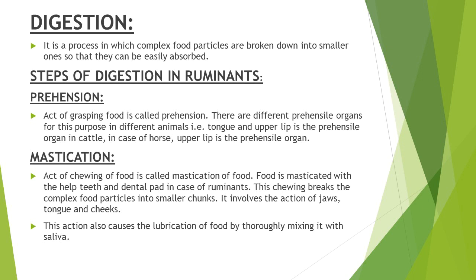In case of cattle, the tongue and upper lip are the prehensile organs. In case of horse, the prehensile organ is the upper lip. In case of dogs, their jaws, teeth, and lips or tongue are the prehensile organs. These organs help to capture the food.